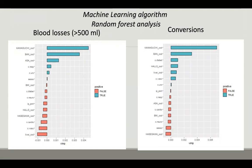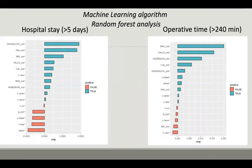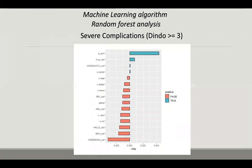As shown in the left graph, the Kawaguchi score was more precise in predicting blood losses and conversion compared to the other difficulty scores. At the same time, Kawaguchi was correlated with hospital stay, whereas the BAN and ALS scores were more correlated with operative time. As in other experiences in the literature, none of the difficulty scores was correlated with severe complications, including in our machine learning algorithm.